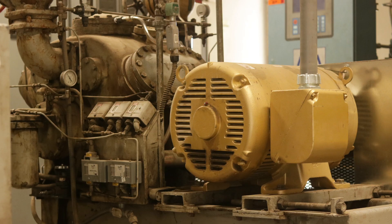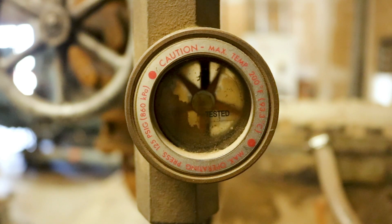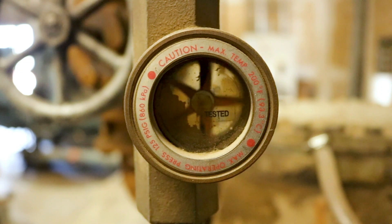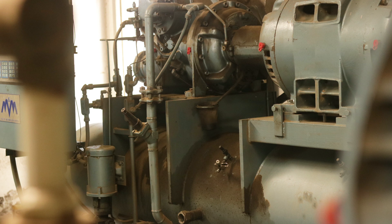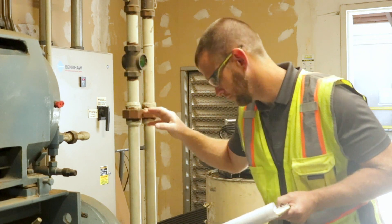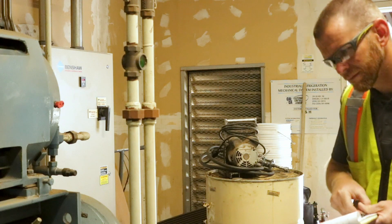The category of oil cooling and cooling medium are the next sections on the checklist. This reciprocating compressor is water cooled, so the "other" and "water" boxes would be checked. This screw compressor is also water cooled but uses a shell and tube oil cooler, so "shell and tube" and "water" boxes would be checked.